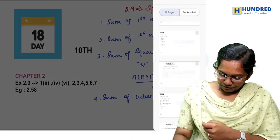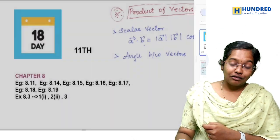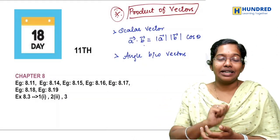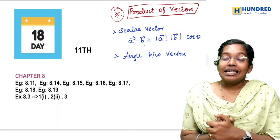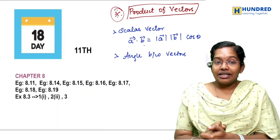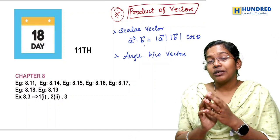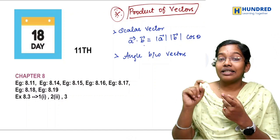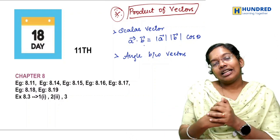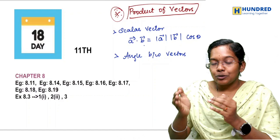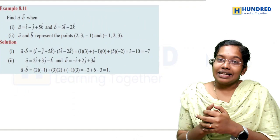There are 10 sums with solutions in the PDF — check the description. For 11th standard students, we will finish Exercise 8.3 on Product of Vectors. You will understand scalar product and vector product, using cos theta to find the angle between vectors. We'll complete all 10 sums quickly.